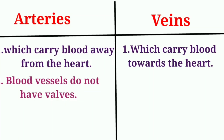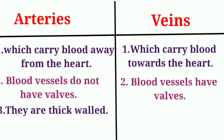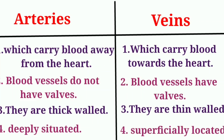Differences between arteries and veins: Arteries do not have valves; veins have valves. Arteries are thick-walled; veins are thin-walled. Arteries are deeply situated; veins are superficially located.